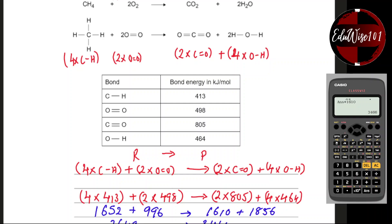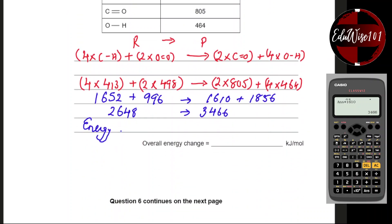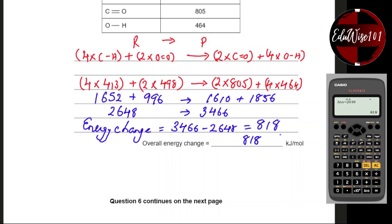So the energy change equals 3466 minus 2648, which equals 818 kJ/mol. For an endothermic reaction you would get a negative value; here you're getting a positive value because it's an exothermic reaction.